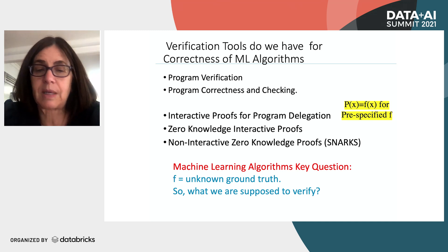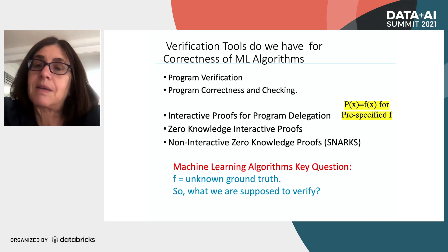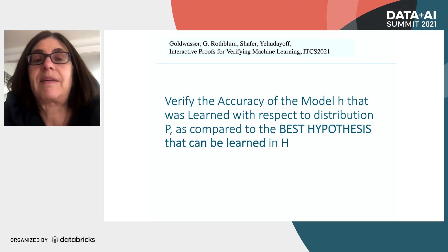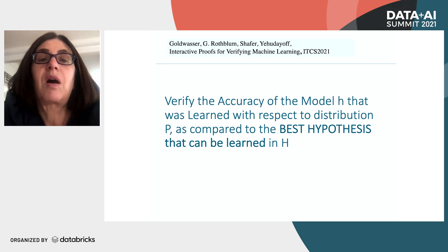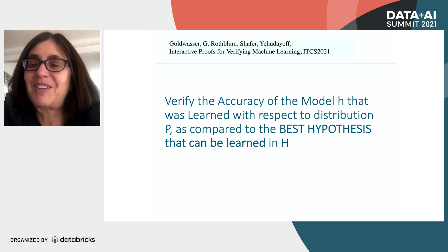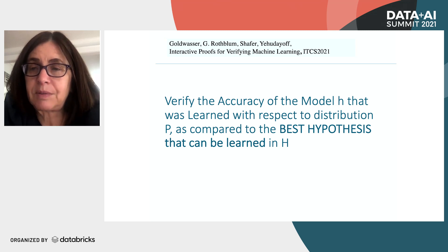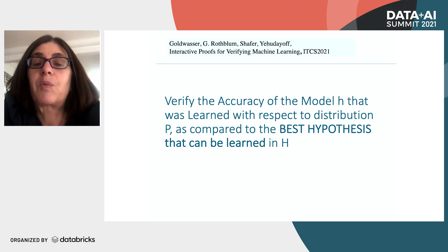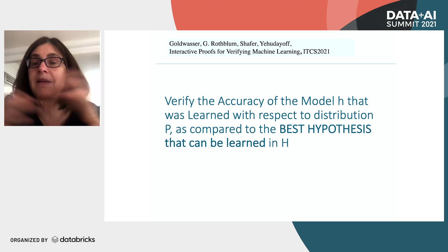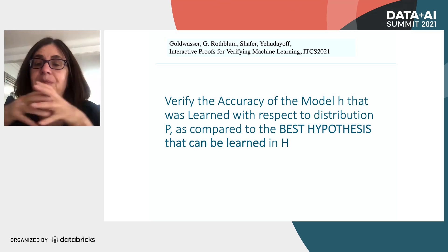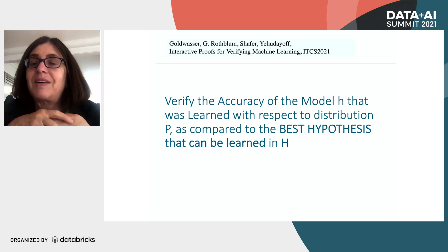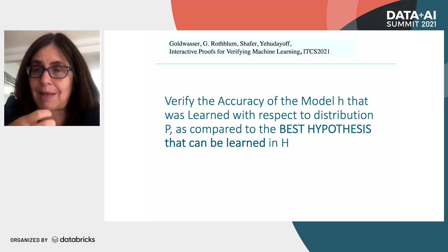The first work I want to tell you about, which deviates from the past, is a paper recently written with colleagues Kai Rothblum, Jonathan Schaefer, and Amir Yudayov on interactive proofs for verifying machine learning. In other words, I want to be able to verify the accuracy of the model — the hypothesis generated — with respect to a distribution, as compared to the best hypothesis that can be learned.